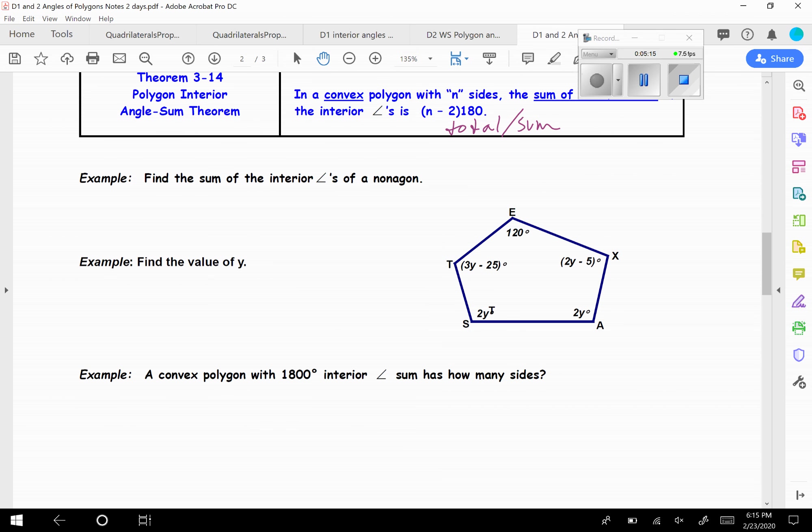So, example. Find the sum of the interior angles of a nonagon. So nonagon means N is 9. So we just plug into our formula. 9 minus 2 times 180. So 9 minus 2, well that's 7, and then multiply that by 180. And you get 1,260. So if you took a nonagon and you added up all the angles inside of it, you would get 1,260.